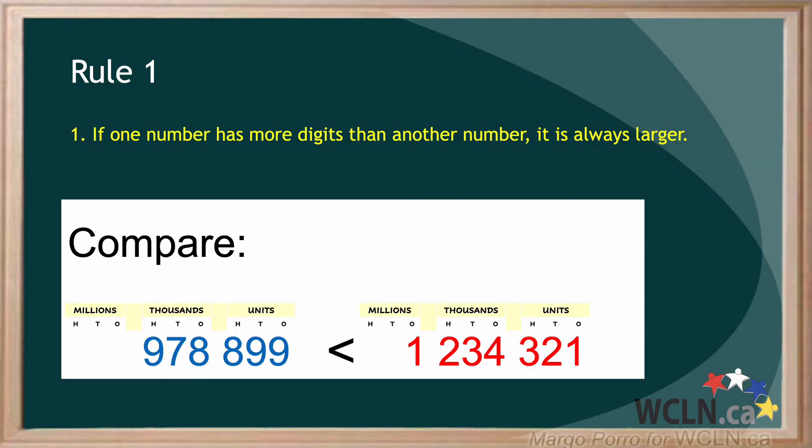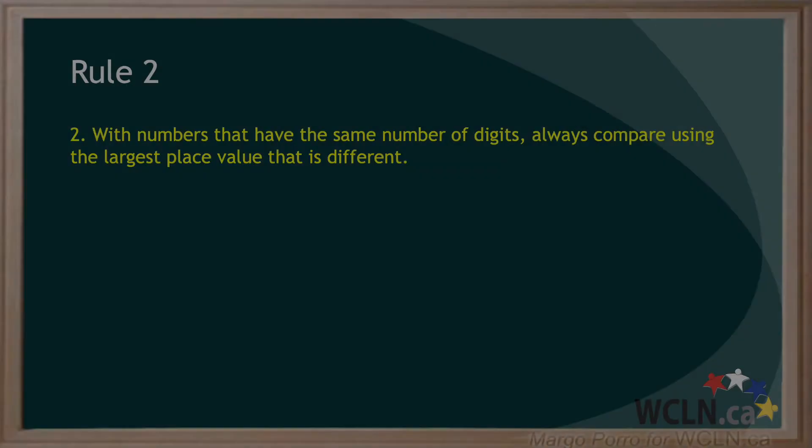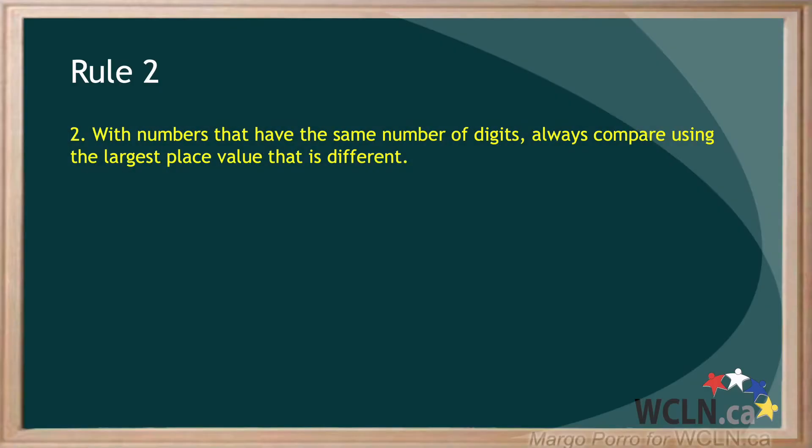Showing that 978,899 is less than 1,234,321, and in your work it would look like this. Sometimes, though, numbers have the same amount of digits. For these numbers, we use the second rule: with numbers that have the same number of digits, always compare using the largest place value that is different. Let's take a look at an example.